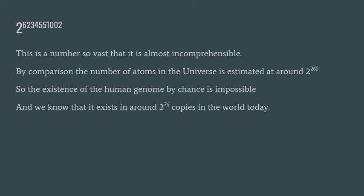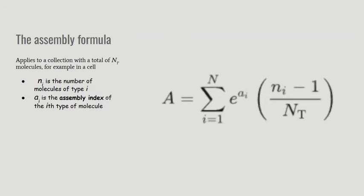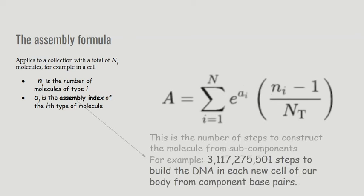Now let's see how Cronin proposes we treat this. He comes up with the assembly formula, which applies to a collection with a total of N subscript T molecules, for example, in a cell. And in this formula, NI is the number of molecules of type I. And AI is the assembly index of the type of molecule.